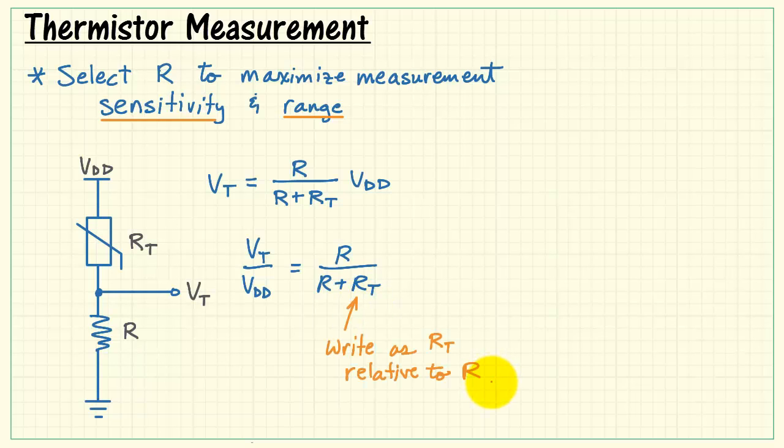Next, I'd like to write the thermistor resistance relative to the fixed resistance. Do a little bit of algebra rearrangement here. Note that the fixed resistance has dropped out in three different places and we're left with this expression.